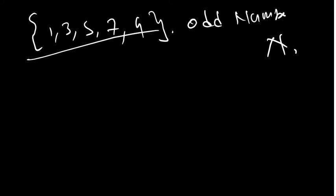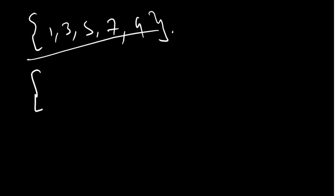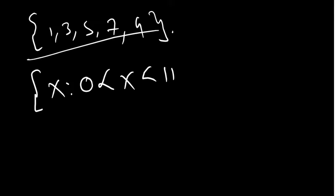For this set of odd numbers from 1 to 9, we write: x such that 0 < x < 11, and x is a member of the odd numbers. This captures 1, 3, 5, 7, 9 — the odd numbers between zero and eleven.